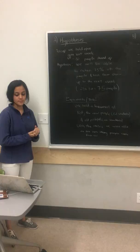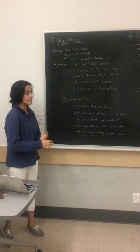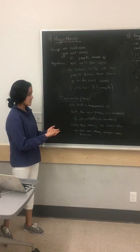We want them to show up to the next event. In class we talked about measuring customer enthusiasm and engagement, which is how often they come back. So 25% of 30 people is 7.5 people. If more than that come, then we succeeded in our hypothesis.